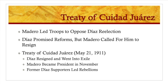Madero led troops to oppose Díaz's re-election. Díaz promised reforms, but Madero called for him to resign. With the Treaty of Ciudad Juárez in May of 1911, Porfirio Díaz resigned and went into exile. Madero became president, but faced a lot of opposition and rebellions led by former Porfirio Díaz supporters.